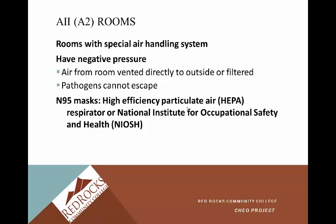A2 rooms have a special air handling system for people who have an airborne disease. These rooms have negative air pressure so that air is not pushed into the rest of the facility — it is vented directly to the outside or through a filter. This prevents airborne pathogens from escaping into the rest of the facility. N95 masks — high-efficiency particulate air, or HEPA, respirators, NIOSH-approved — ensure airborne particles cannot pass through the mask and infect you.